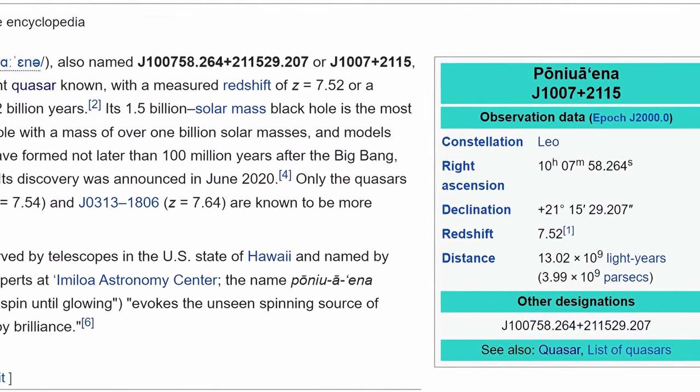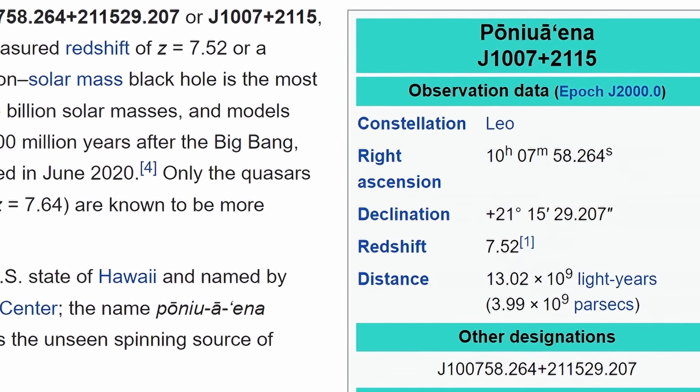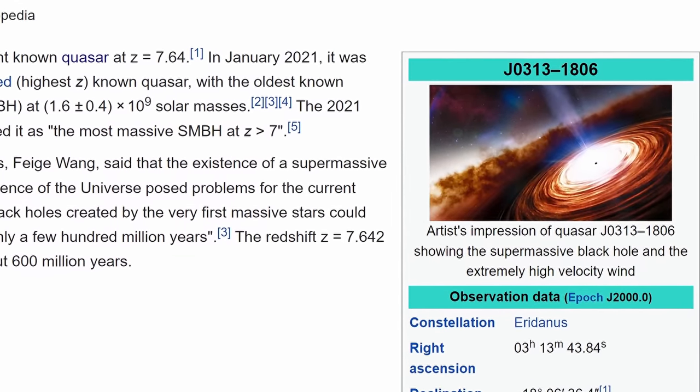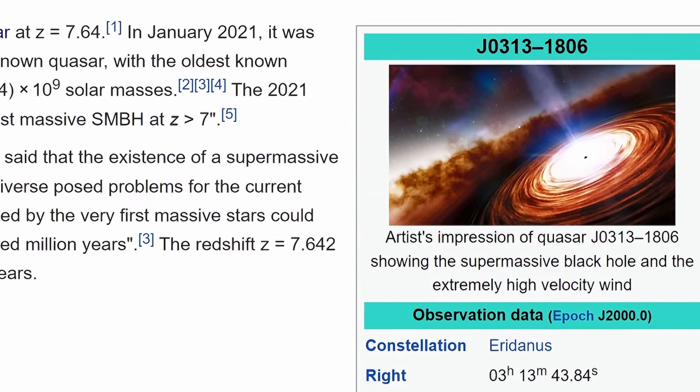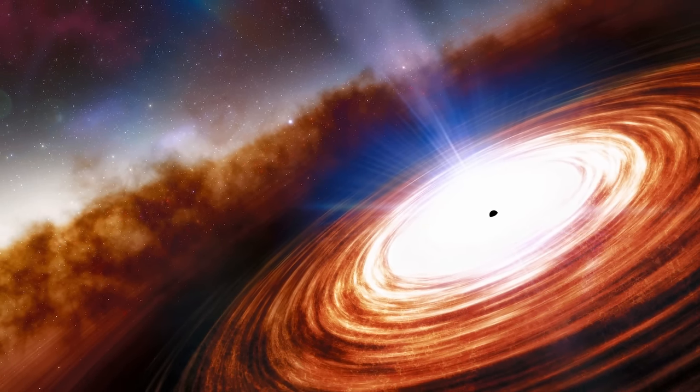This one is at least 1.5 billion masses of the sun, and was already around 700 million years after the beginning of the big bang. And this one is 1.6 billion masses of the sun, and was around 670 million years after the beginning of the universe. And so this sort of created a problem for modern astronomy.